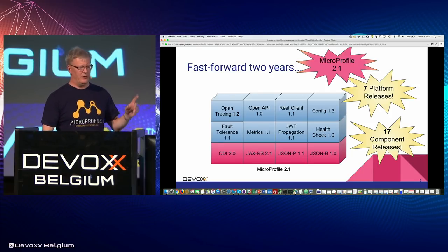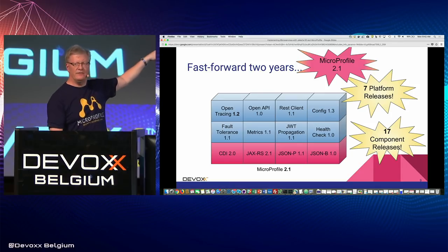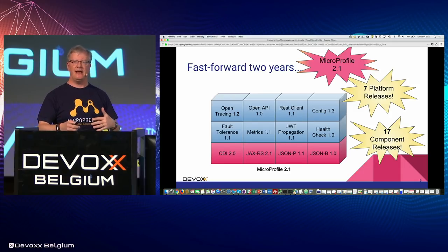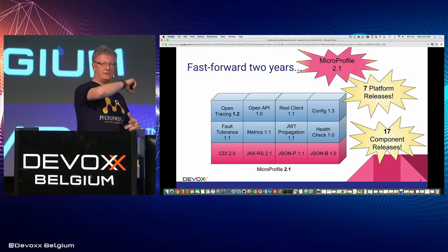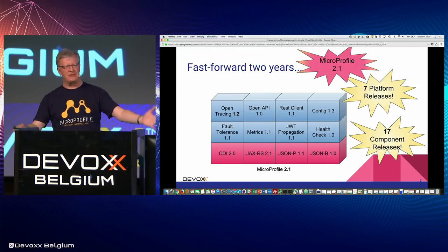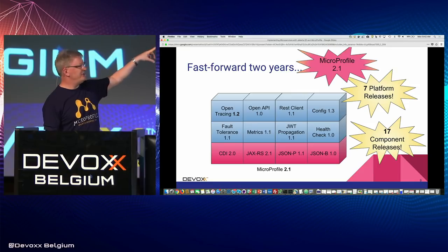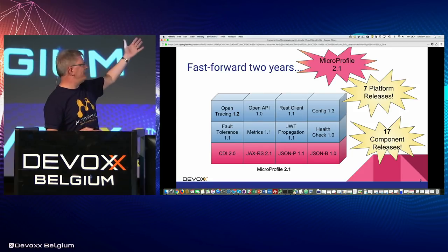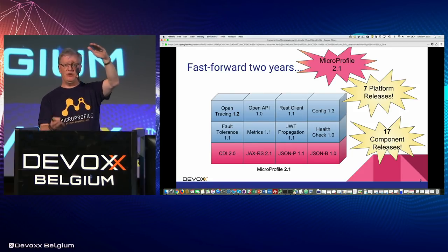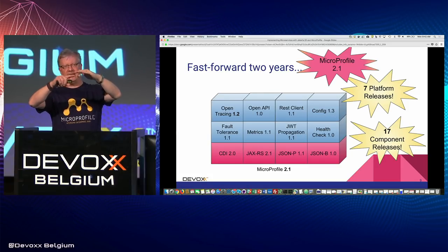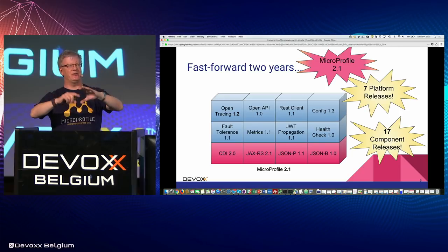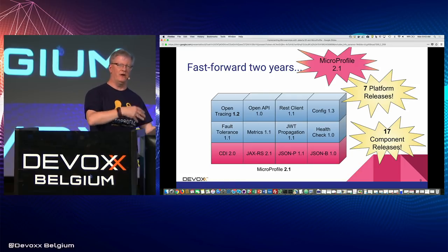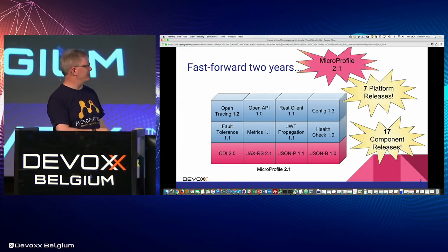I'm not going to go into all the detail of the individual components — that's more of Ivar's part during the coding section. But when I post the charts sometime this week, I do have background on every one of these blocks. If you're interested in what OpenAPI or OpenTracing is, I've got a separate chart for each of those, taking you to the specification, the GitHub repository, and a short description.